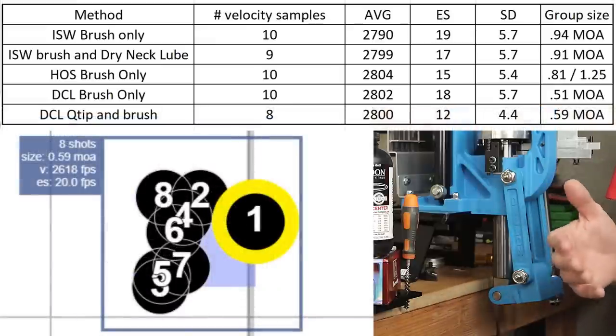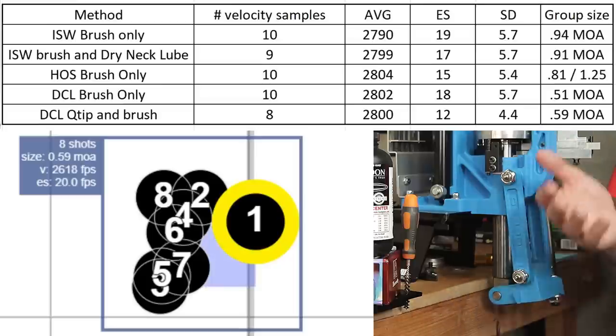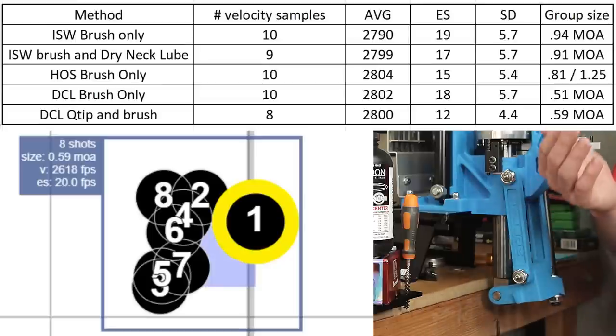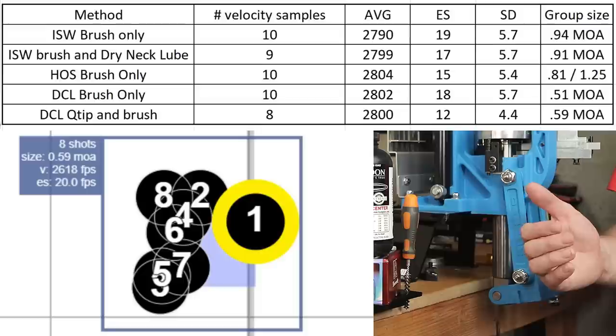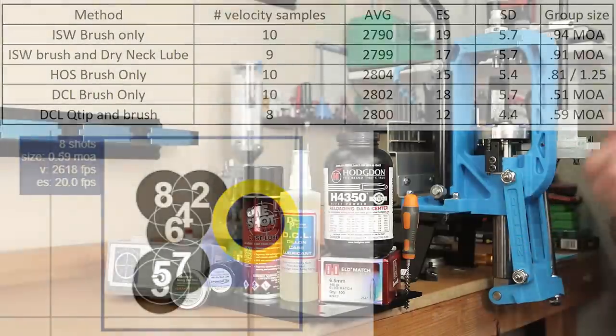For our last group of samples, the Dillon case lube adding the Q-tip to try and remove the case lube from the neck of the case, over eight samples our average velocity was 2800 feet per second. Our standard deviation dropped to 4.4 and our extreme spread was only 12 feet per second. However, our 8 shot group was 0.59 MOA.